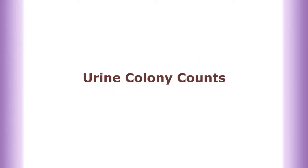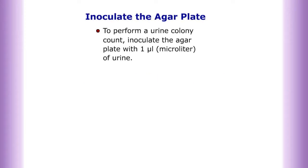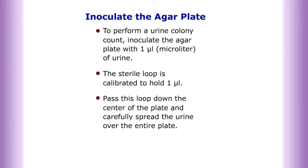Urine colony counts. To inoculate the agar plate and perform a urine colony count, inoculate the agar plates with one microliter of urine. The sterile loop is calibrated to hold one microliter. Pass this loop down the center of the plate and carefully spread the urine over the entire plate. Incubate the plates overnight at 37 degrees Celsius.